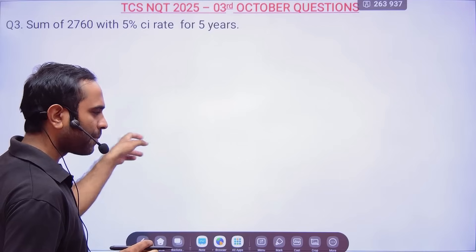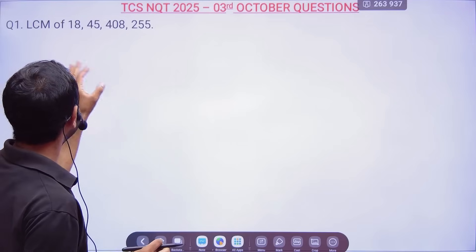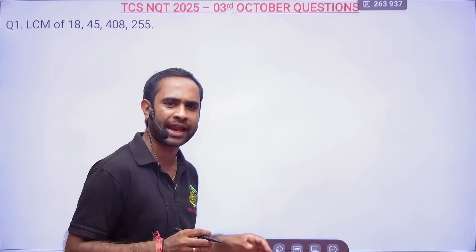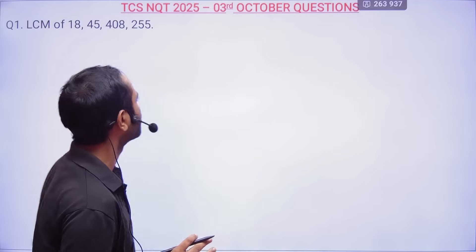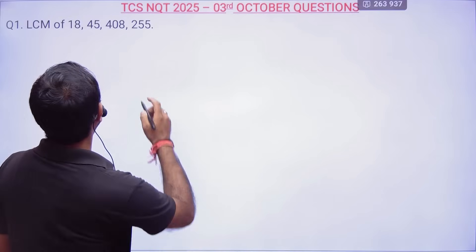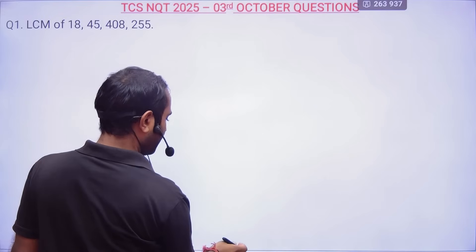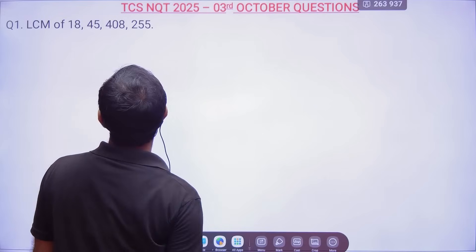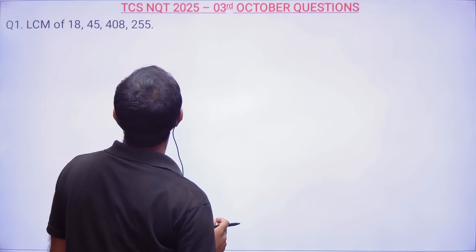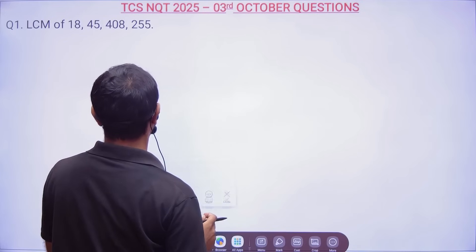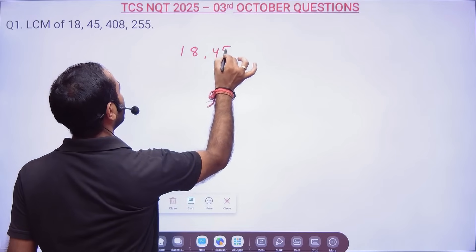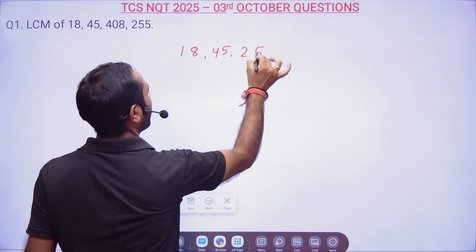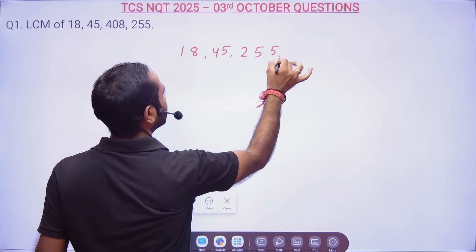Now, question number 1 — they are asking you to find out the LCM. There were many questions which were very easy. These are all memory-based questions shared by students. So here, LCM of 18, 45, 408, and 255.